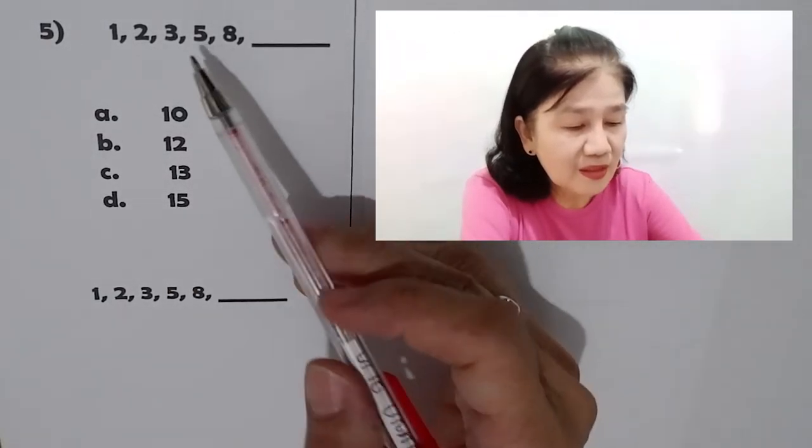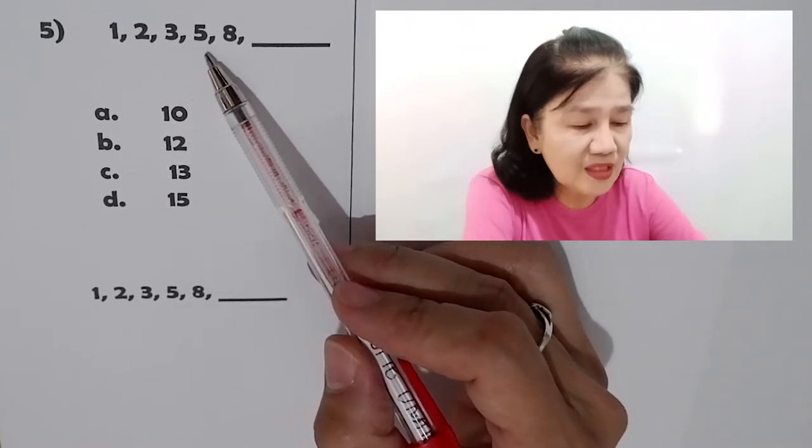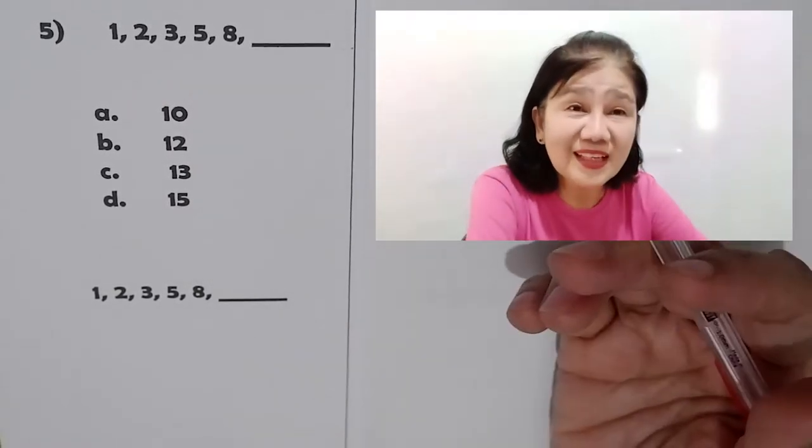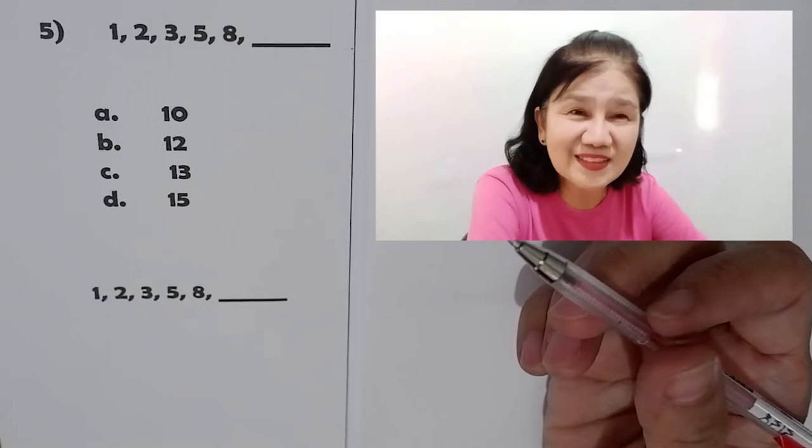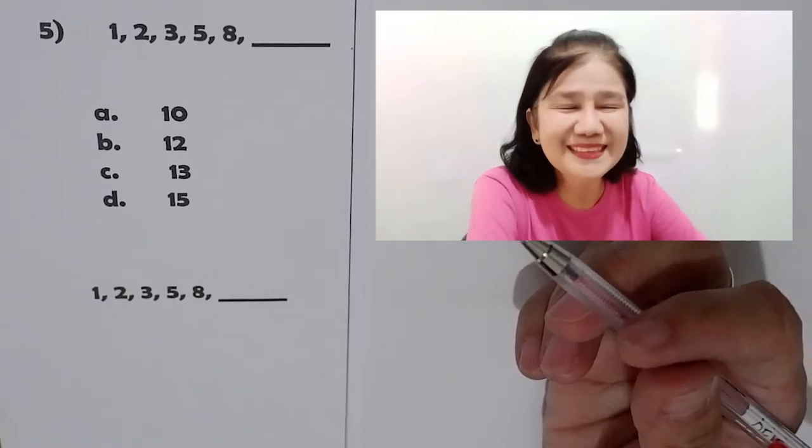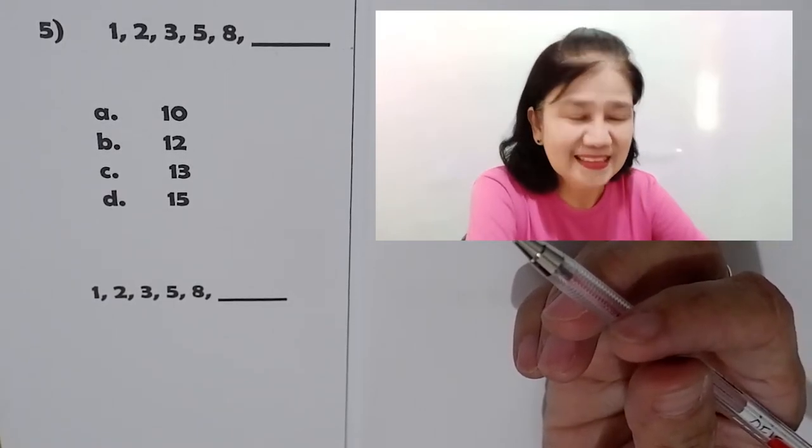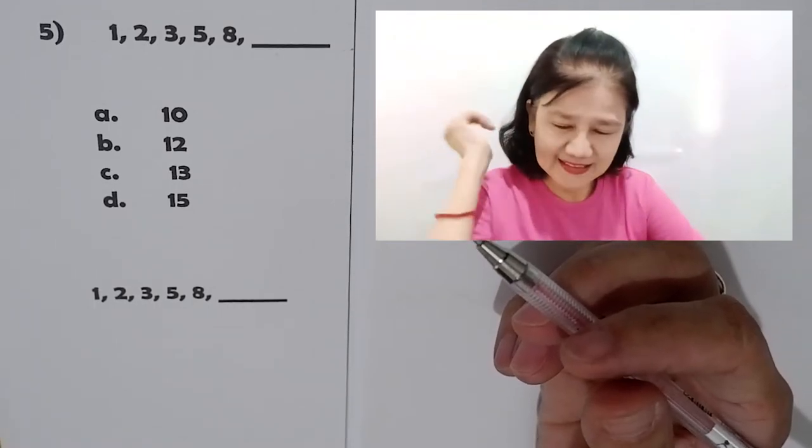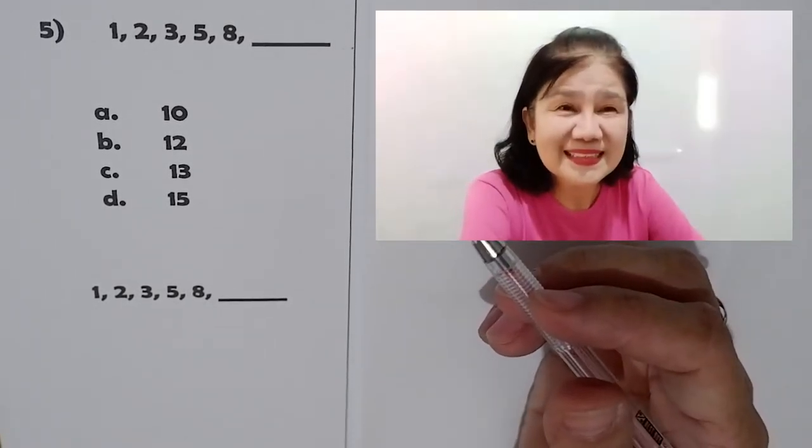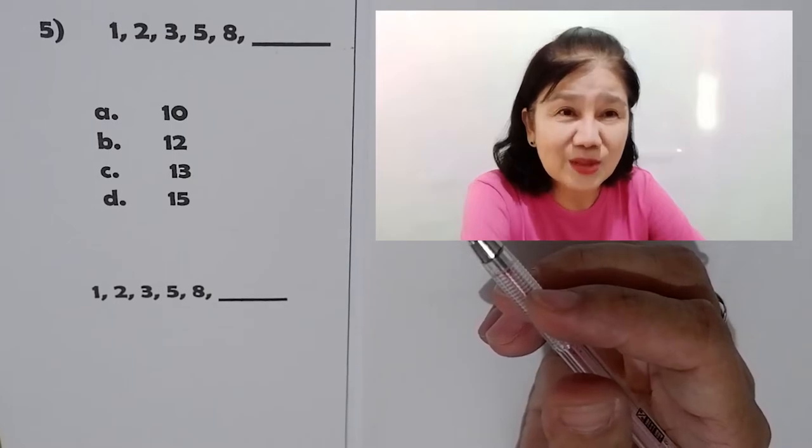Okay. Did you get that? Next is problem number 5. In problem number 5, we have here 1, 2, 3, 5, 8 blank. Okay. You're given a few seconds to answer it. Go. Okay. Shall we? Okay.